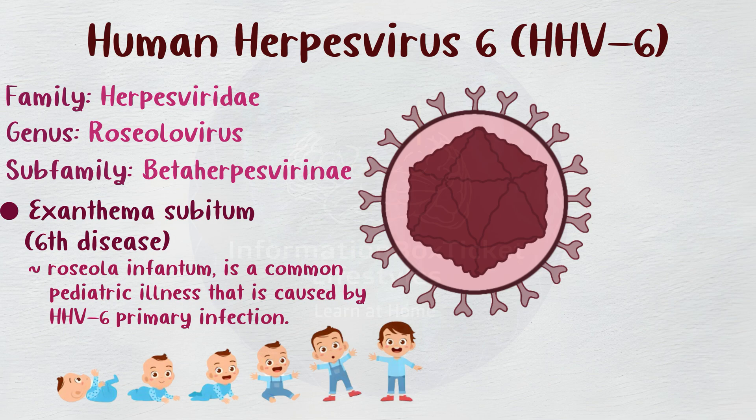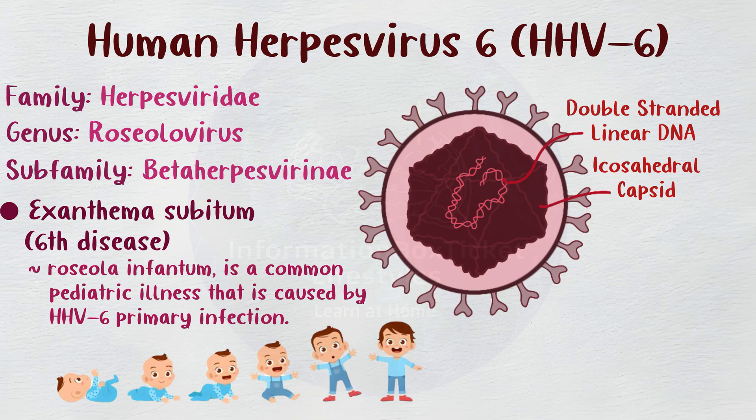A spherical protein shell with 20 equilateral triangle faces, known as an icosahedral capsid, envelops the double-stranded linear DNA of HHV-6. The tegument, a protein coat that covers the capsid, is followed by the envelope — a lipid membrane that the virus absorbs from the host cell's nuclear membrane and contains viral glycoproteins.